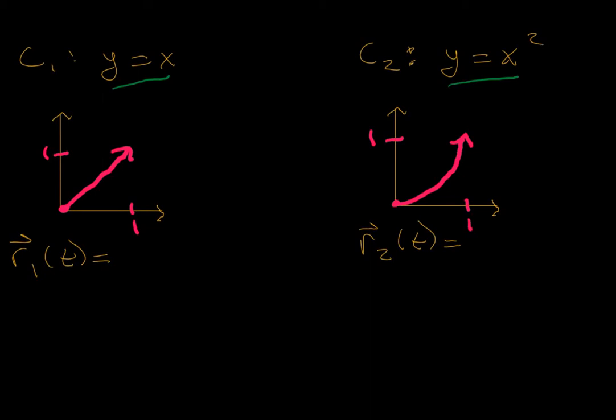First we need to write the parametric or the vector version of these curves. So for the linear function y equals x, r of t would be equivalent to x is t and y is t. And those will happen from time values from 0 to 1. If t is 0, you begin at the origin and if t is 1, you end at this point here (1,1). We'll eventually need the velocity vector, so let's calculate the velocity vector. So the derivative of the x component is 1 and also is the same as true for the derivative of the y component.